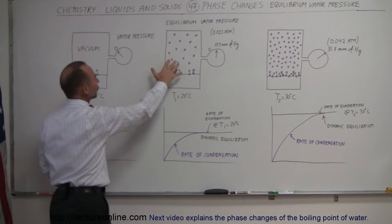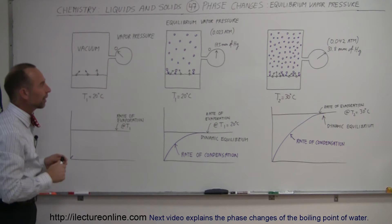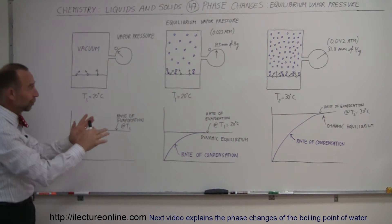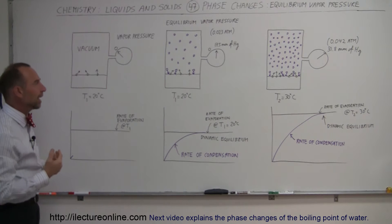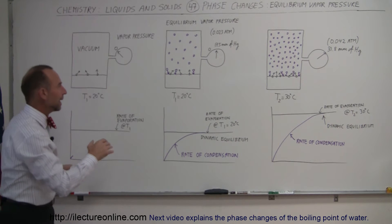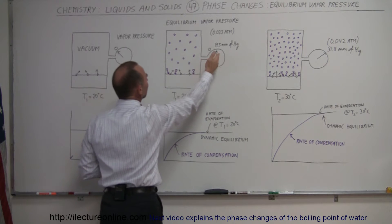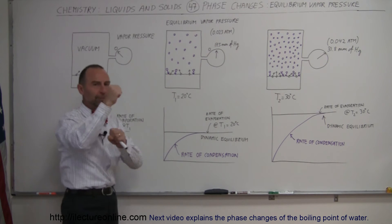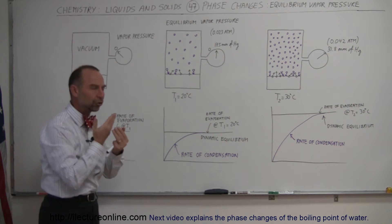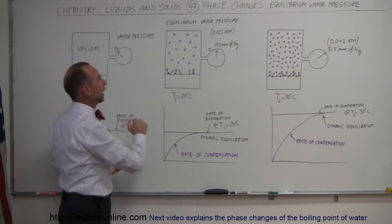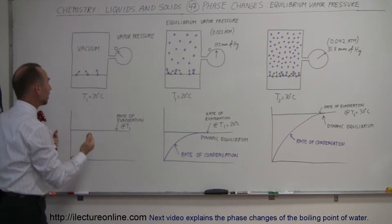So you end up with a bunch of water molecules in the vacuum area there. Once you have water molecules there, it's no longer a vacuum. Those water molecules will be in a vapor state, and the accumulation of those water molecules in here will indicate a certain amount of pressure, because they're bouncing around and bouncing up against the wall — they exert a vapor pressure, and that vapor pressure can be measured by a pressure gauge.